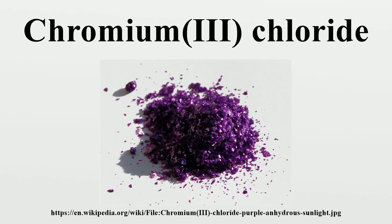CrCl3 is a Lewis acid, classified as hard according to the hard-soft acid-base theory. It forms a variety of adducts of the type CrCl3L3, where L is a Lewis base. For example, it reacts with pyridine to form an adduct CrCl3 + 3C5H5N → CrCl3(py)3. Treatment with trimethylsilyl chloride in THF gives the anhydrous THF complex: CrCl3·6H2O + 12SiCl → CrCl3(THF)3 + 6SO2 + 12HCl.